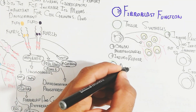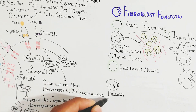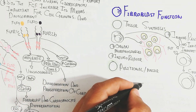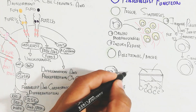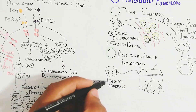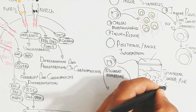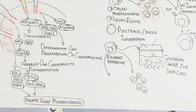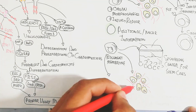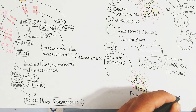Fibroblasts also provide positional niche information. The basement membrane containing fibroblasts signals stem cells in the skin, leading to skin formation — tegumentogenesis. Antimicrobial peptide synthesis occurs near the skin, and near the digestive system fibroblasts provide positional information for tissue repair.